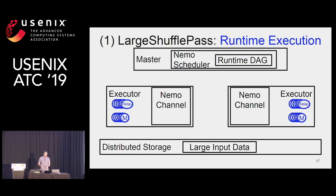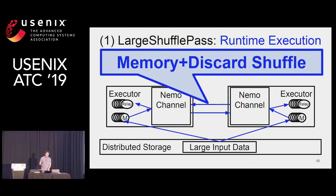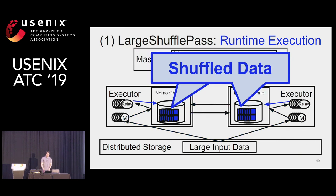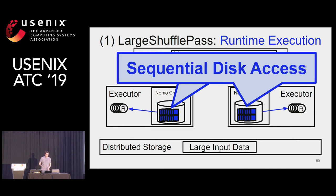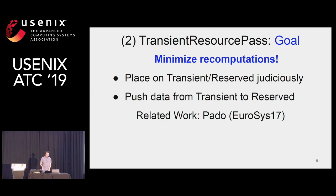In execution, we schedule relay and map vertices concurrently to honor the push data flow, and they perform the in-memory discard shuffle. Then the shuffle data from relay is written to disks, and the reduce vertices are scheduled and fetch the shuffle data sequentially. This reduces the disk seek overheads encountered with large data shuffle.